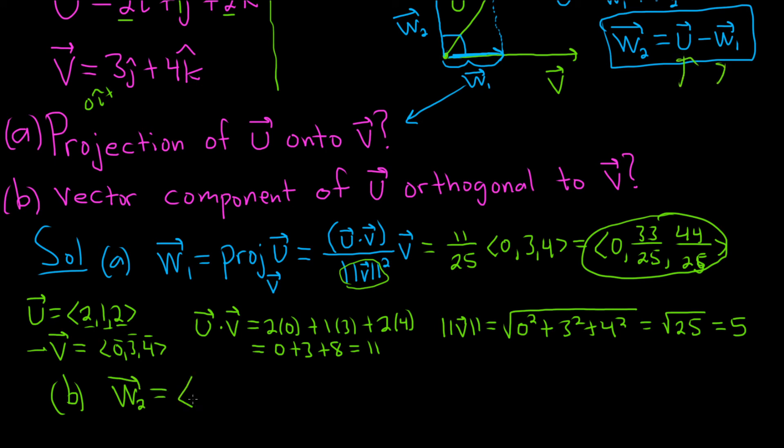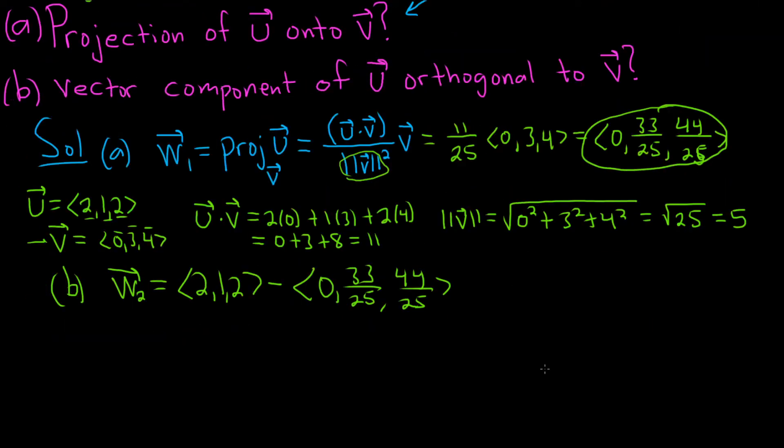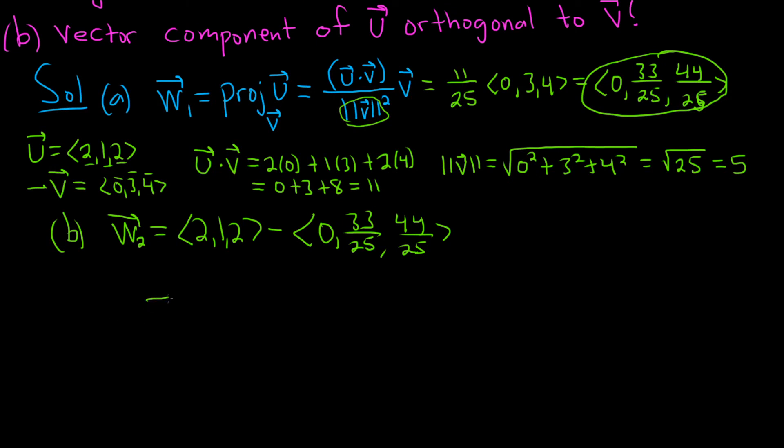So u is 2, 1, 2. Minus our w1, which is our projection. So 0, 33 over 25, and 44 over 25. Before we subtract,